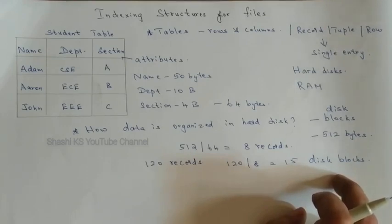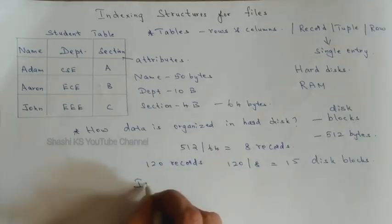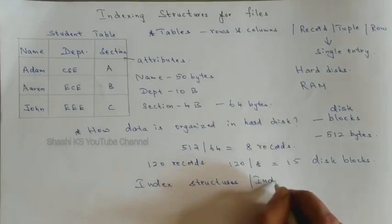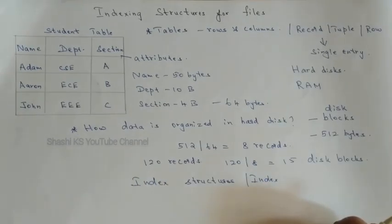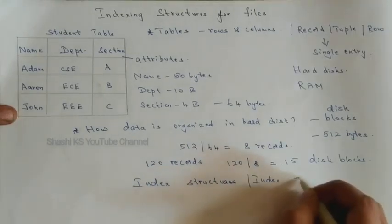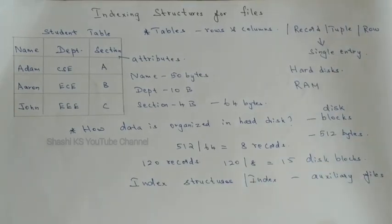When the CPU executes queries, the database system must provide capabilities for efficiently executing them. Since the database is typically stored on the hard disk, the DBMS must provide specialized data structures and search techniques to speed up the search for desired records in the hard disk. That specialized data structure is your index structure, or index — a specialized data structure which speeds up the searching of desired records in the hard disk.